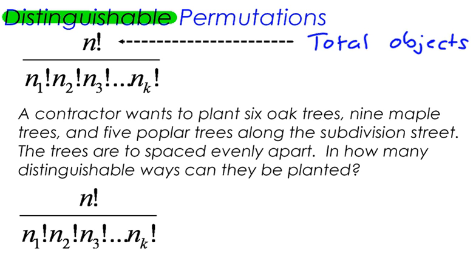Now when you have distinguishable permutations, on the bottom here we've got n sub 1 factorial, n sub 2 factorial, n sub 3 factorial, all the way until n sub k. This just means however many different types of objects. So this would be the factorials for the types of objects.